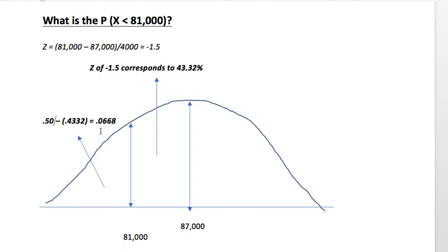So, once again, that is just a quick overview of the solution for last week's problem, dealing with what is the probability that our random variable X will have a value, in this case, a sales value of less than $81,000.